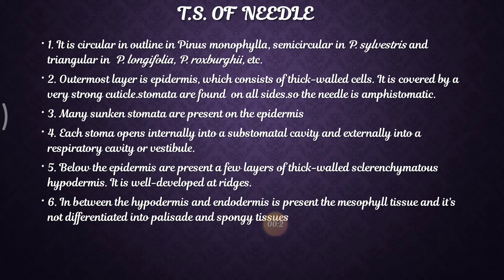Coming to the Pinus needle, we are familiar with two types of leaves: one is a scaly leaf, and another is a foliage leaf. The needle is circular in outline in Pinus monophylla, semi-circular in Pinus sylvestris, and triangular in Pinus longifolia and Pinus roxburghii. The needle shape differs between individual species — this is to be noted.